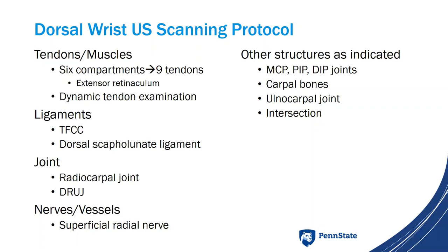To review the dorsal wrist ultrasound scanning protocol from the AMSSM website: for a complete exam you should evaluate all six extensor compartments containing nine tendons, perform dynamic tendon examination if warranted, assess ligaments including the TFCC and dorsal scapholunate ligament, evaluate joints including the radiocarpal joint and distal radioulnar joint, and assess nerves and vessels — specifically the superficial radial nerve if indicated.